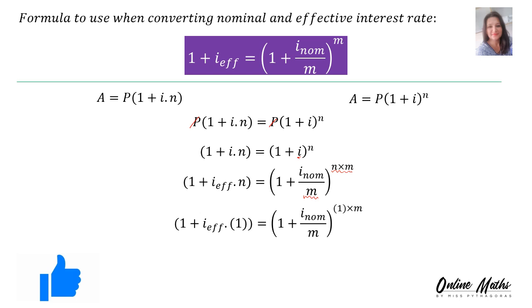All of this is happening in one year, so in N's place you substitute 1 on both sides. Since anything times 1 is itself, the formula becomes: 1 plus I-effective equals 1 plus I-nominal divided by M, raised to the power of M. That's your formula — you cannot get this wrong in the exam ever again.